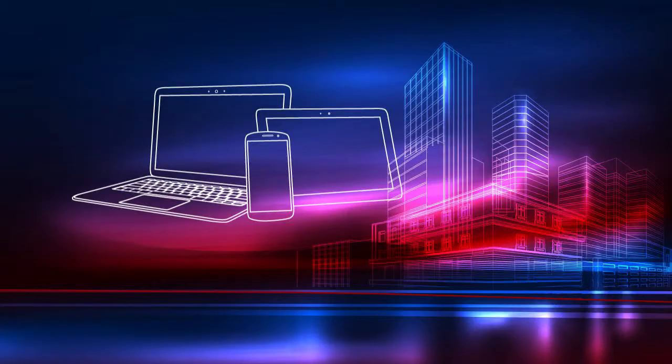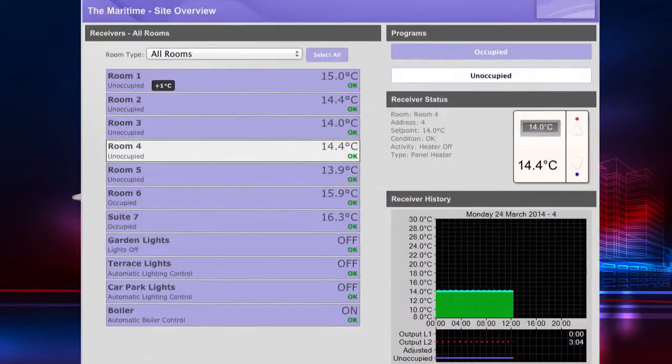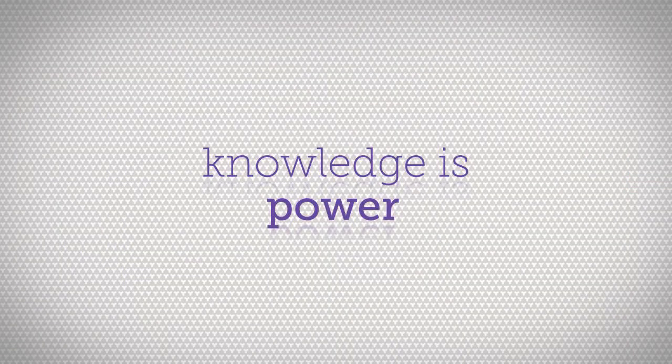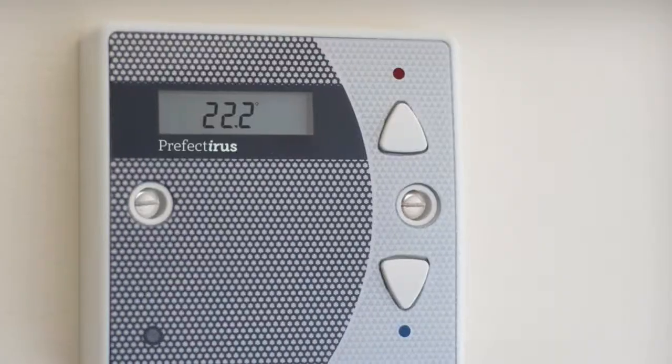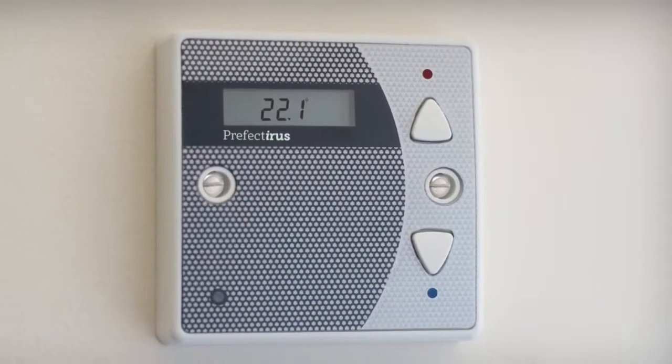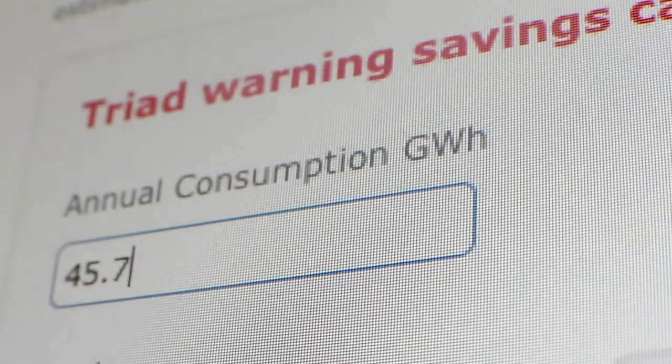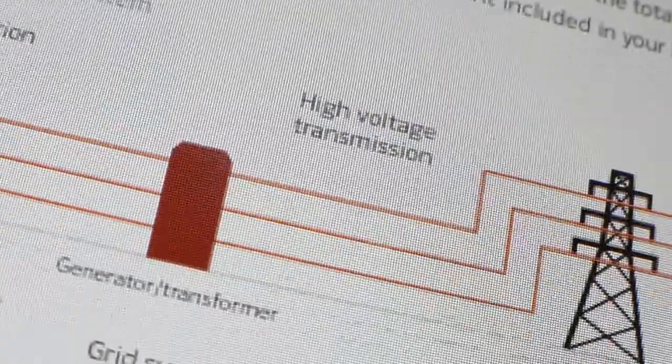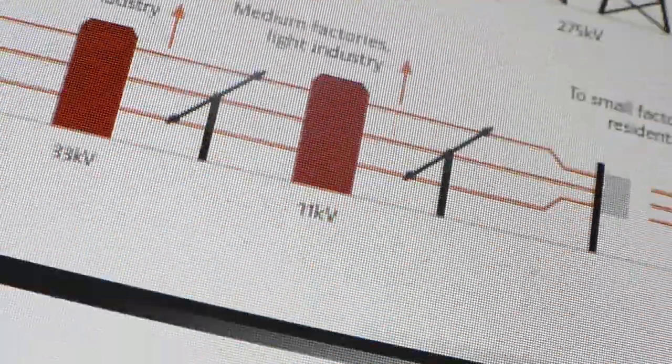And hey presto, you have the ability to reduce utility bills significantly. But the savings don't end there. As they say, knowledge is power. By knowing your energy usage and taking advantage of triad warnings, duos and maximum demand, Prefect IRIS will react and use power when it's most efficient to do so.